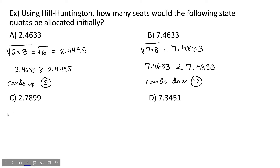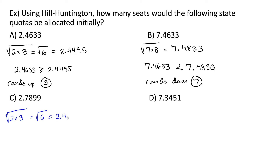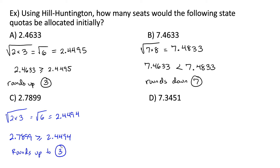For part C, we need to find the geometric mean of 2.7899. The square root of 2 times 3, or square root of 6, ends up being 2.4494. And 2.7899 is greater than or equal to 2.4494, so this rounds up to 3. One thing to note: normally if a number would round up anyway, it's going to be greater than or equal to its geometric mean.